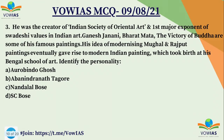Third question. He was the creator of the Indian Society of Oriental Art and the first major exponent of Swadeshi values in Indian art. Ganesh Janani, Bharat Mata, and The Victory of Buddha are some of his famous paintings. His idea of modernizing Mughal and Rajput paintings eventually gave rise to modern Indian painting, which took birth at his Bengal School of Art.